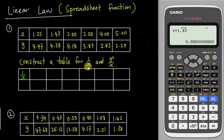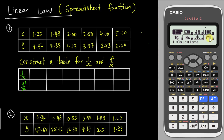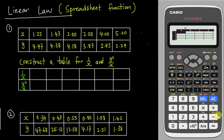There's a faster way to get all these values by using the new spreadsheet function in this calculator. First, you need to know what you want for your new x-axis and y-axis. Here they tell you they want 1/x and y²/x. Go to the menu and choose number 8, which is the spreadsheet.